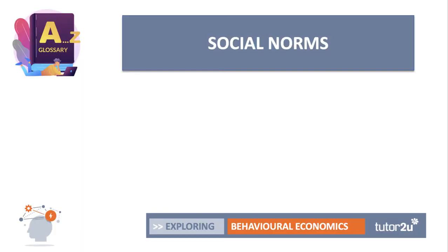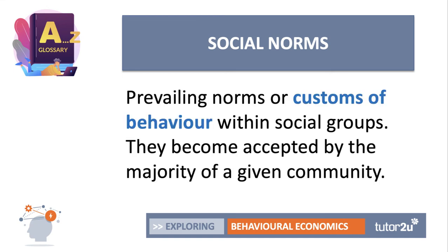Social norms build on this idea that our behaviour is biased towards the communities and cultures of the groups we live in. A social norm is a prevailing norm or custom of behaviour within well-defined social groups, and these norms have become accepted by the majority of a given community — things like queuing in shops or observing white lines in car parks. Social norms have become accepted, and much of our behaviour is influenced by other people's behaviour, particularly those we respect. Social norms can and often do change — for example, around smoking in public places and drink driving.